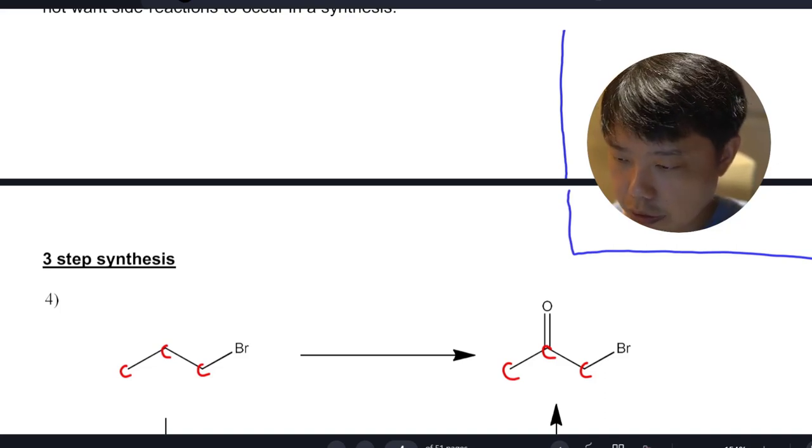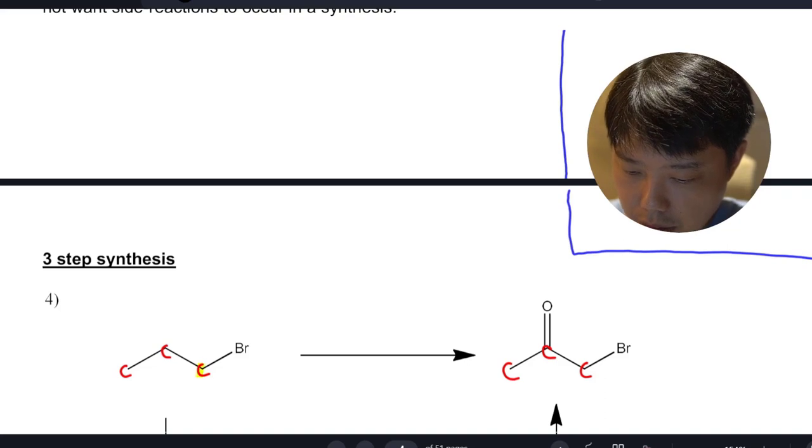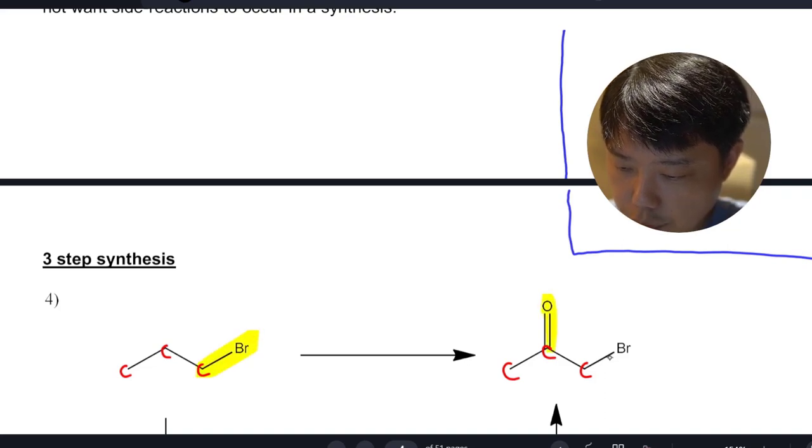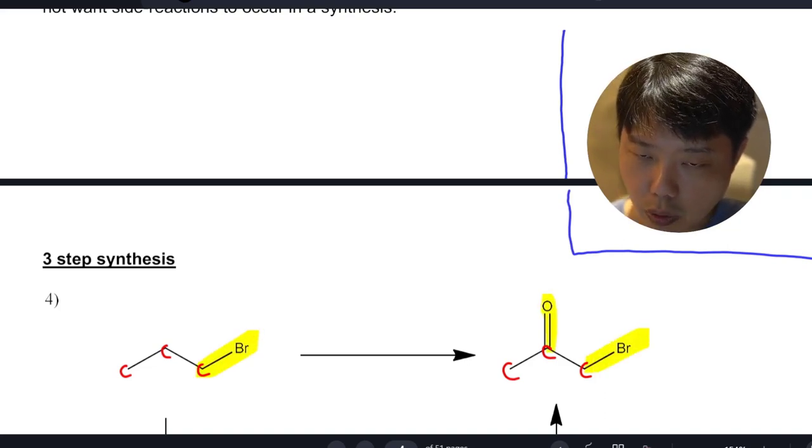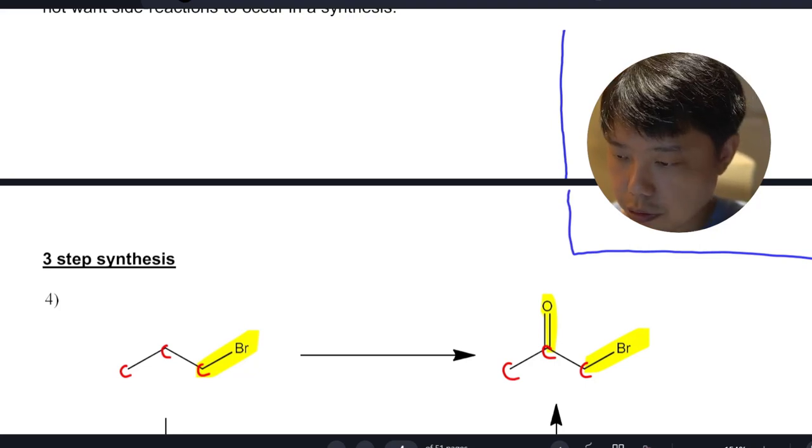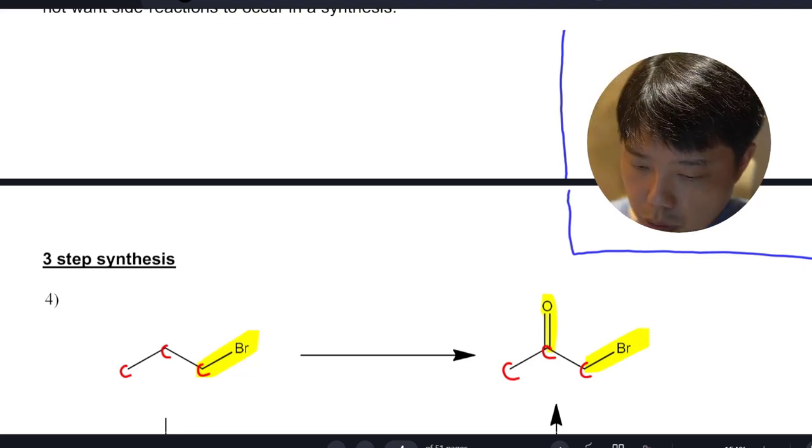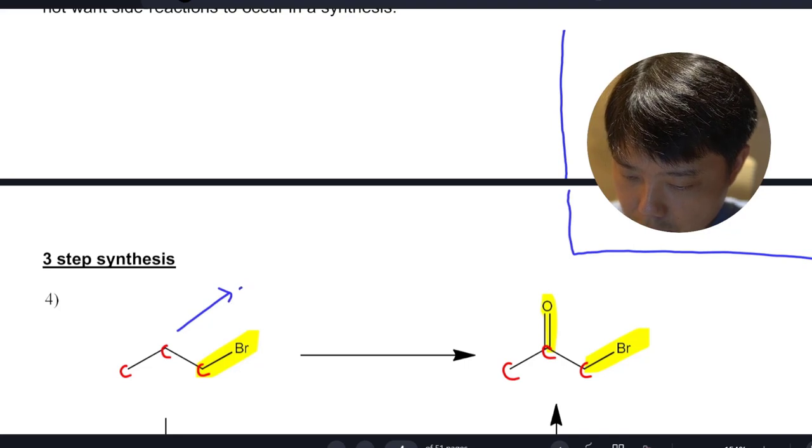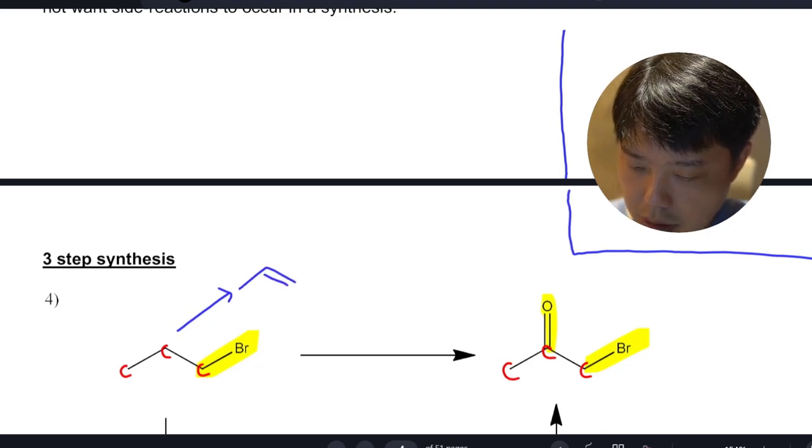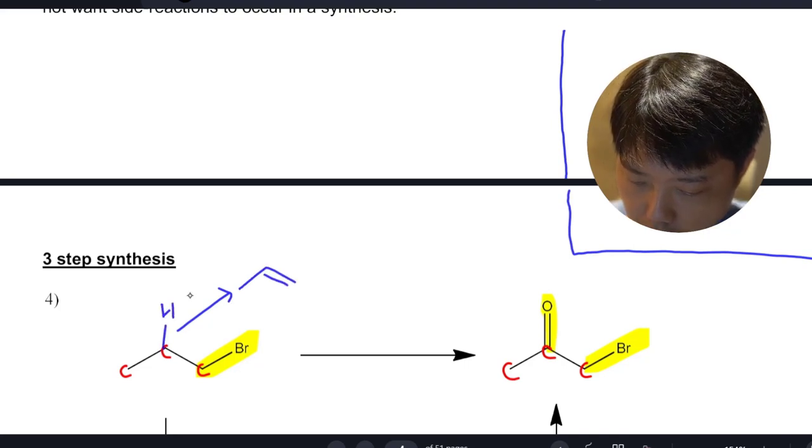The answer is unequivocally yes. We have one functional group increasing to two functional groups. We are going to use the elimination method. The first thing we're going to do is eliminate HBr.